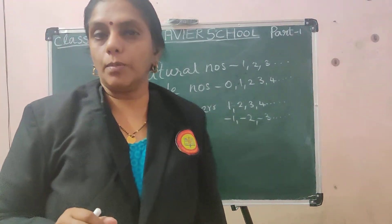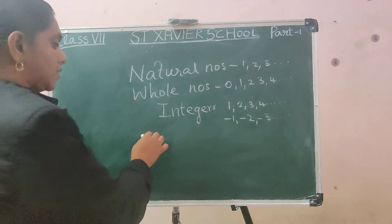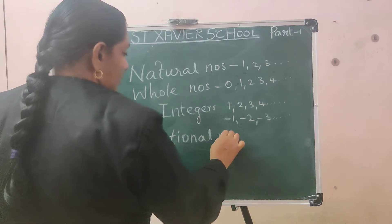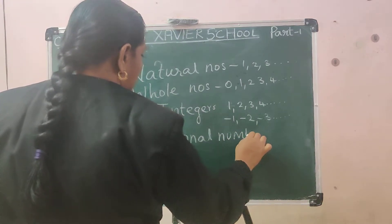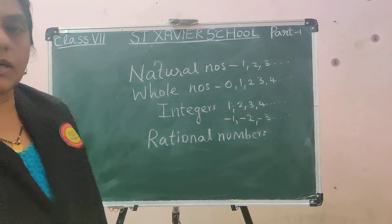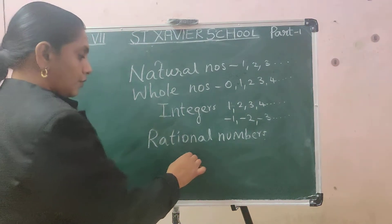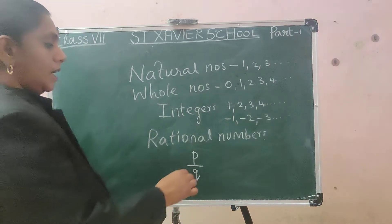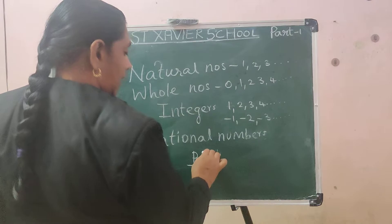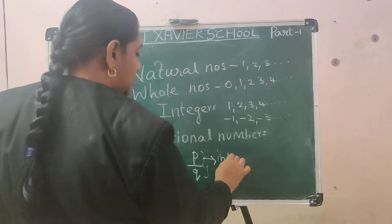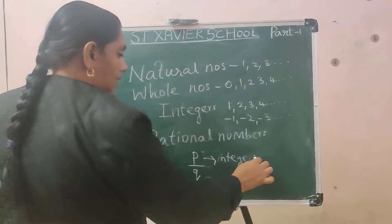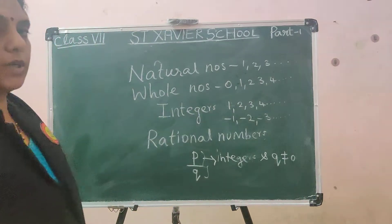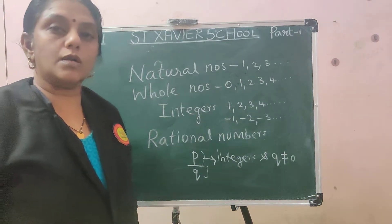Now we are going to a new topic called rational numbers. Rational numbers means that it can be expressed in the form of P by Q, where P and Q are integers and Q is not equal to 0. That means the denominator should not be 0. Then it is called a rational number.